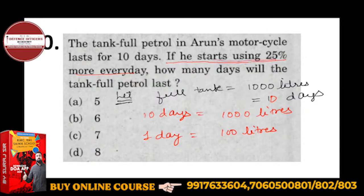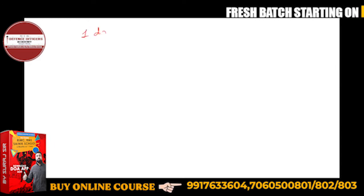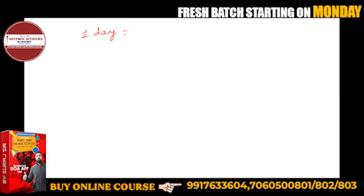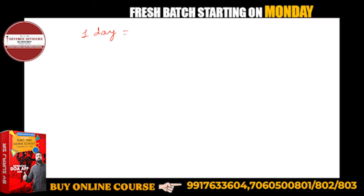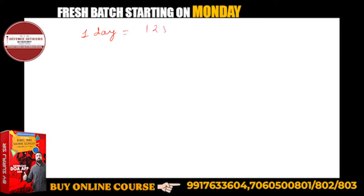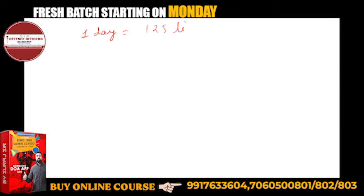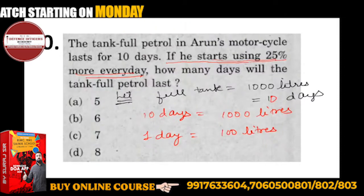Now, what is he doing? Using 25% more every day. So, 25% more than 100 liters — directly, how much is it? 125 liters. I can write it directly: 25% more means 125 liters per day.